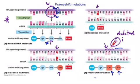So, deletion or insertion — or addition, which means the same thing — mutations lead to a frameshift. That is, the framing of the codons either moves to the left or to the right, and this alters the amino acids that end up in the sequence, and therefore alters the codons.